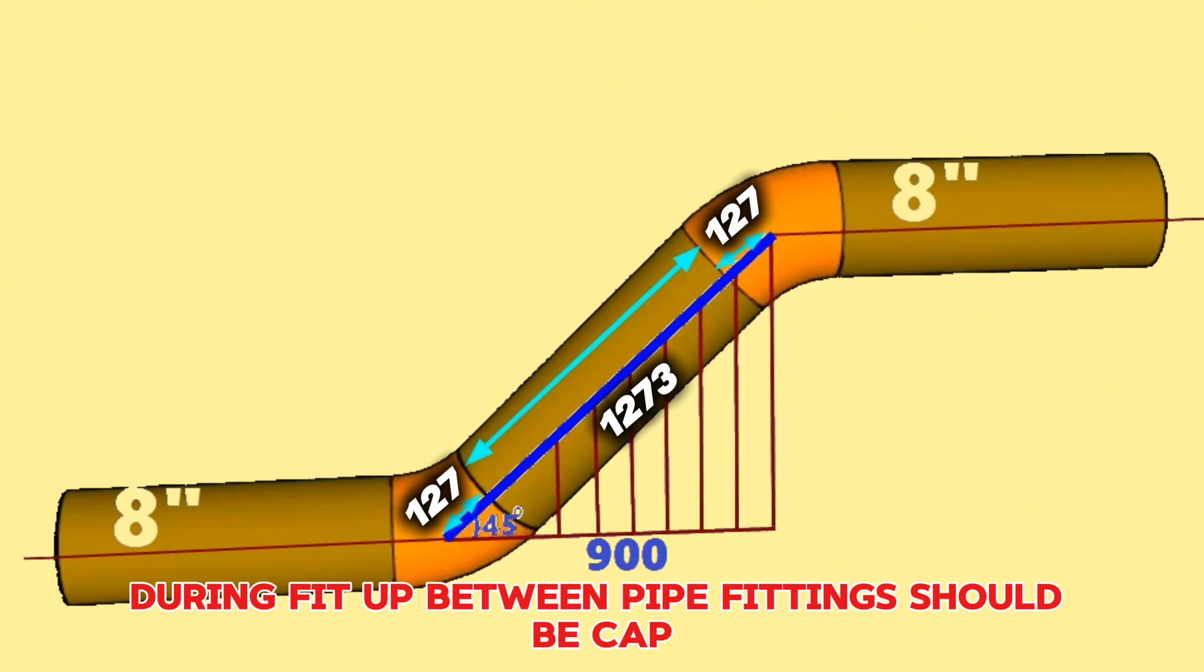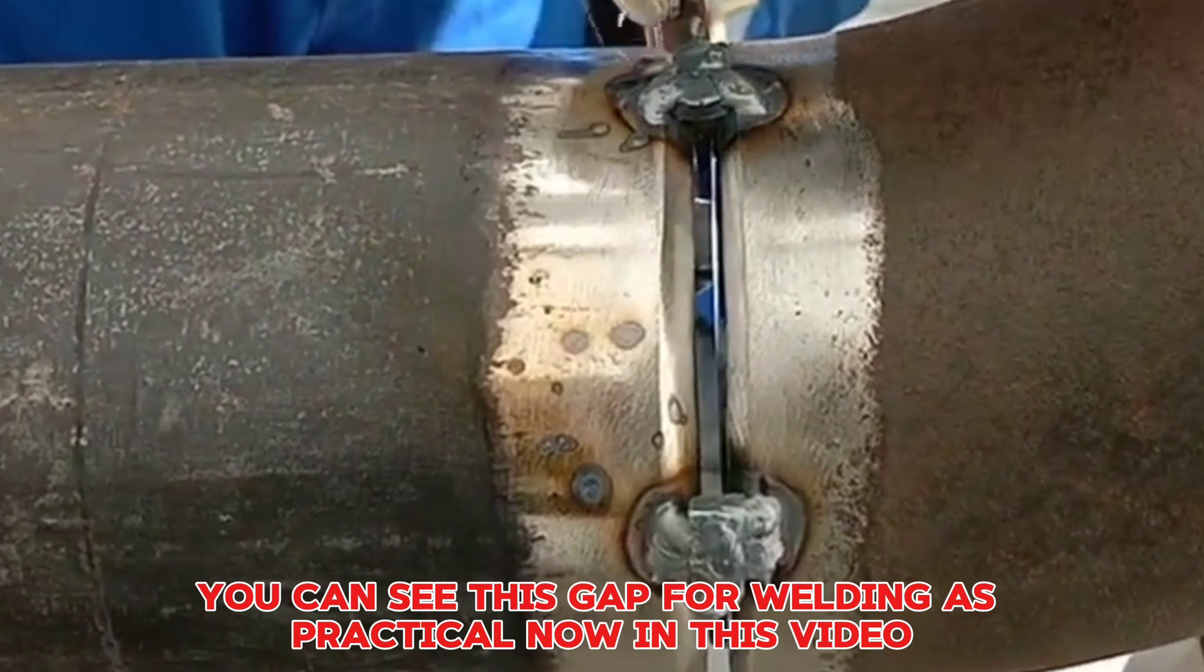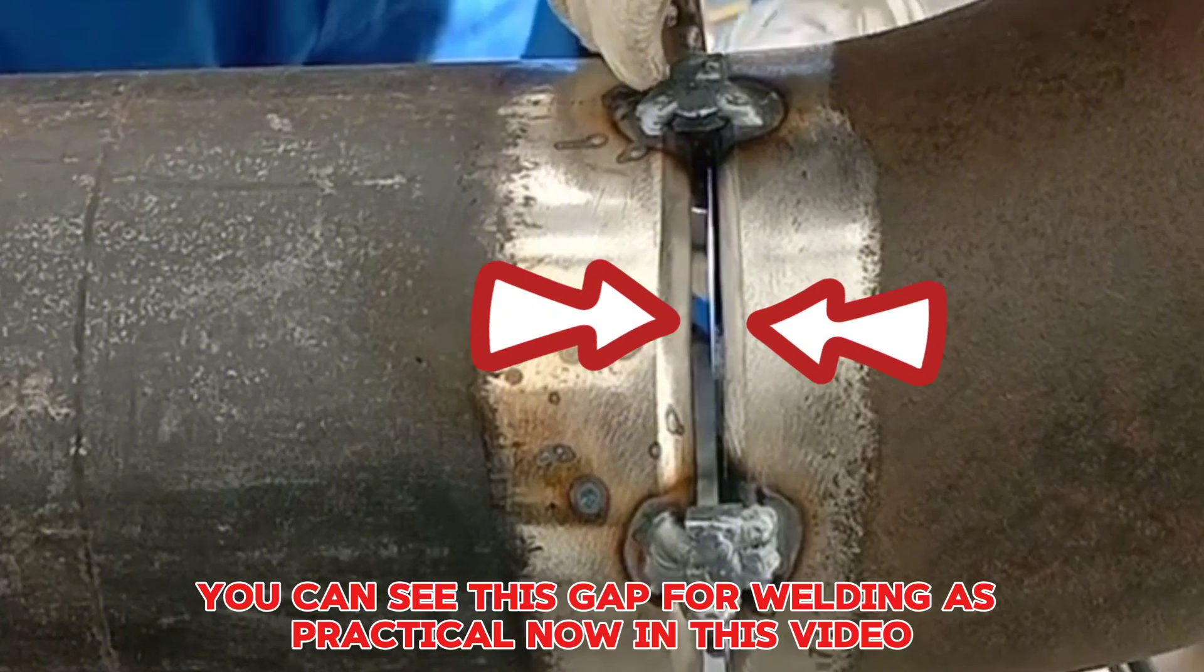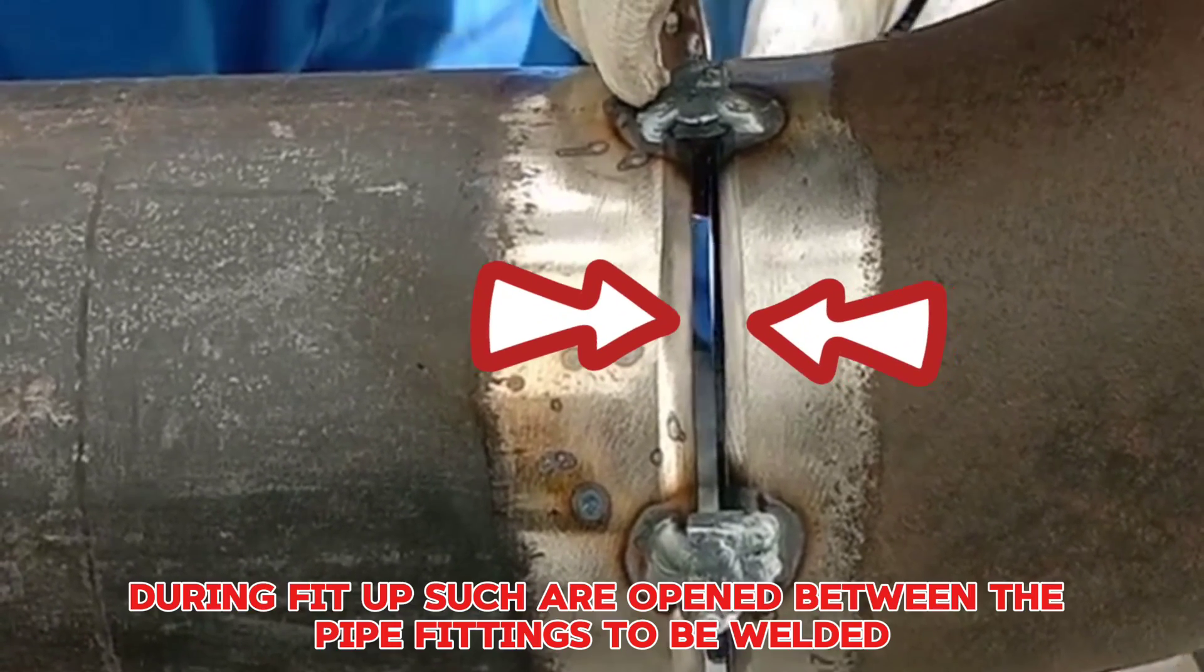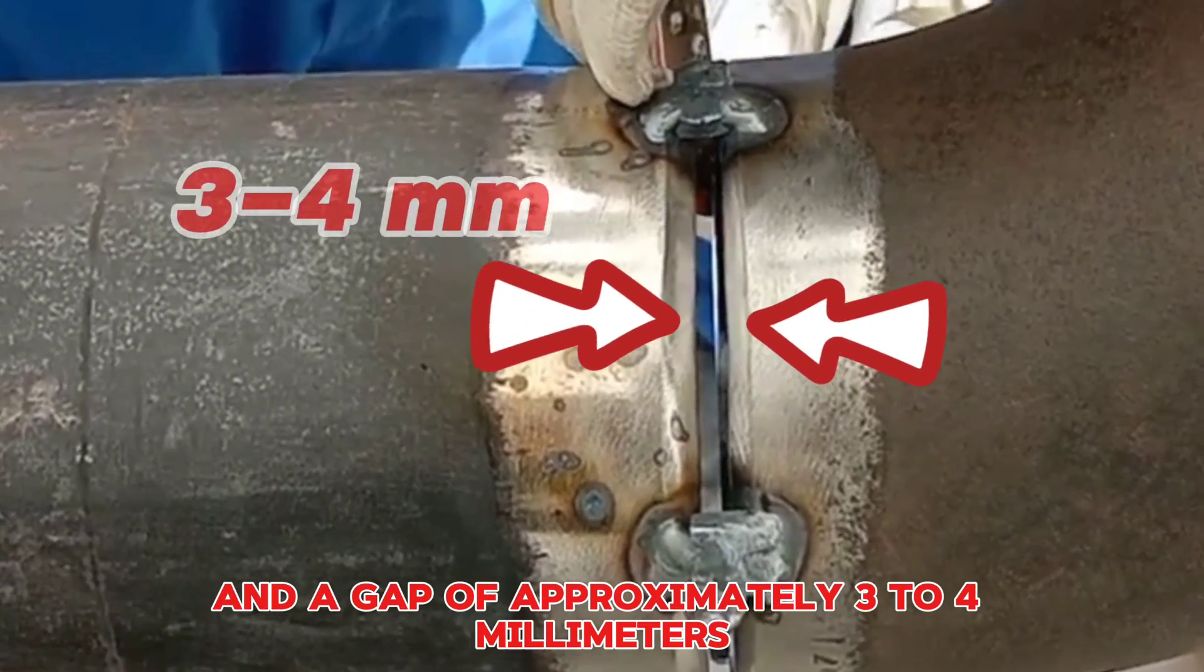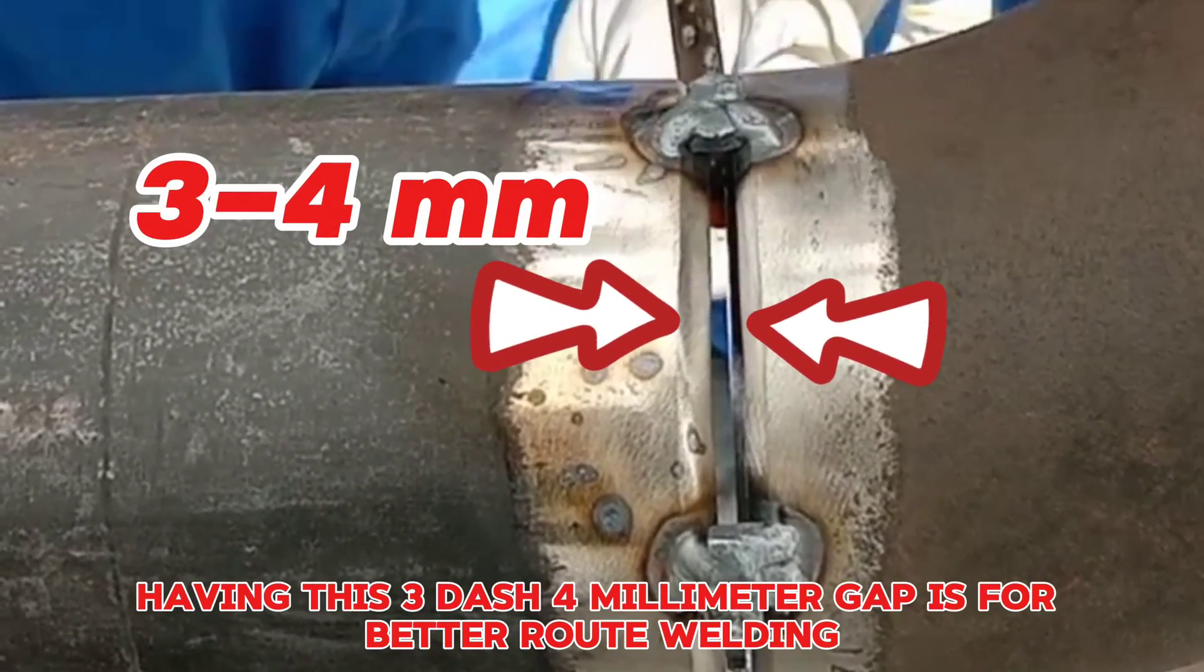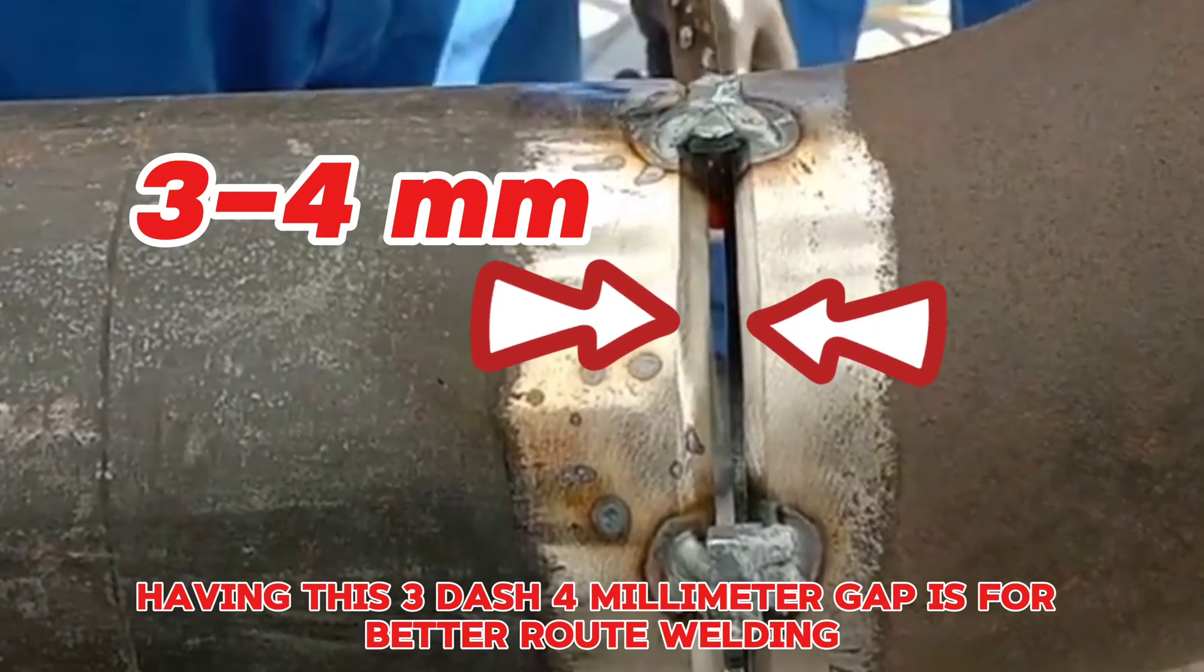During fit-up, between pipe fittings should be a gap of approximately 3 millimeters for welding. You can see this gap for welding in this video. During fit-up, gaps are opened between the pipe fittings to be welded of approximately 3 to 4 millimeters. Having this 3 to 4 millimeter gap is for better root welding.